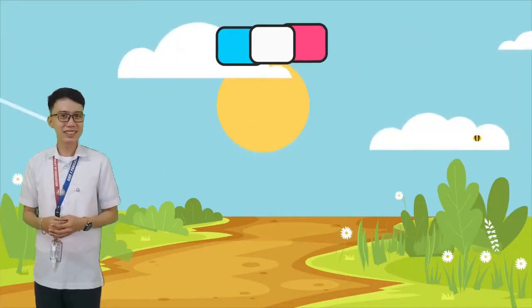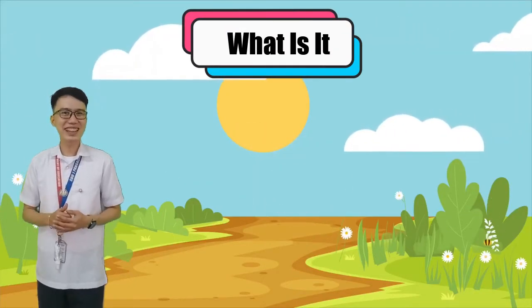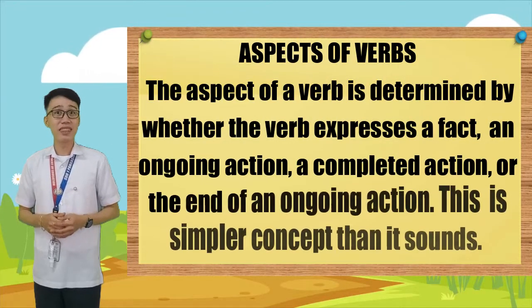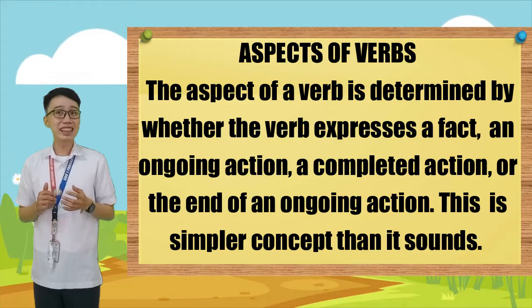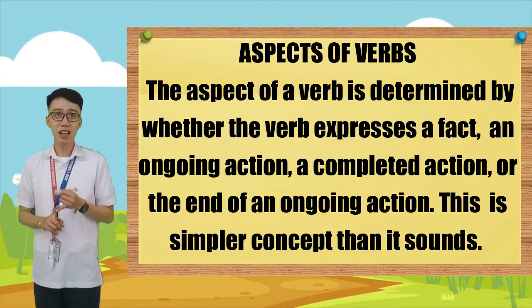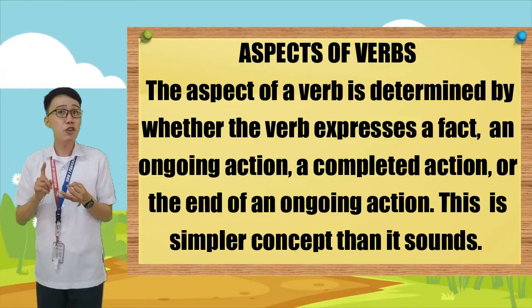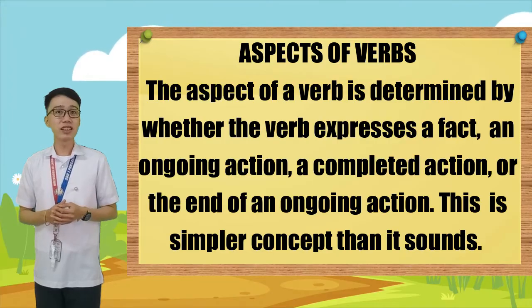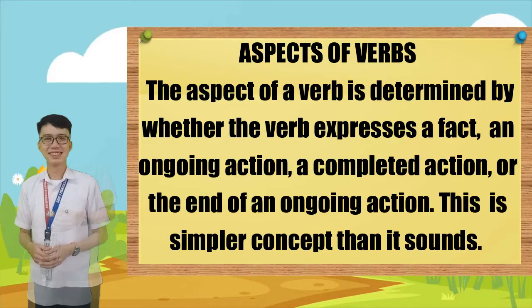Are you ready to unfold and enjoy this week's lesson? Great! Let's do this, kids! Aspects of verbs: The aspect of a verb is determined by whether the verb expresses a fact, an ongoing action, a completed action, or the end of an ongoing action. This is a simpler concept than it sounds. Look at this infographic.